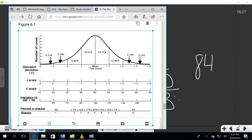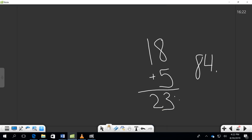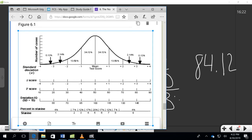So I am going to add these numbers: 34.13, 34.13, 13.59, 2.14, and 0.13. I end up with 84.12, which rounds out to 84%, which brings me back to my chart down here.